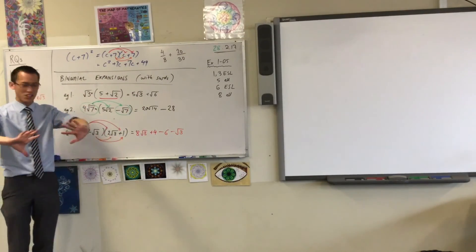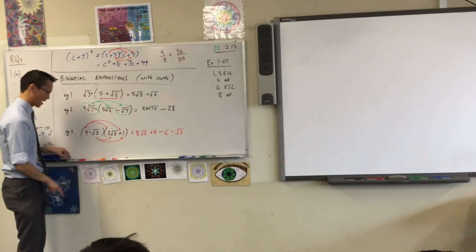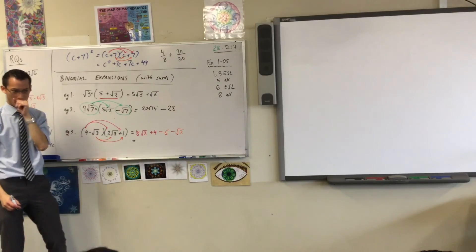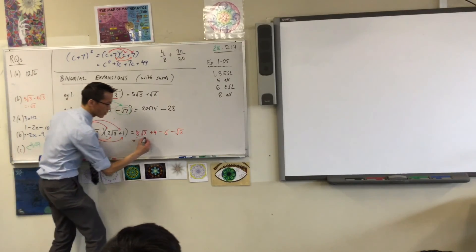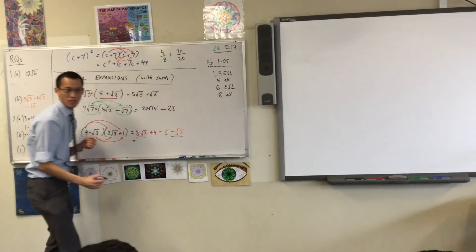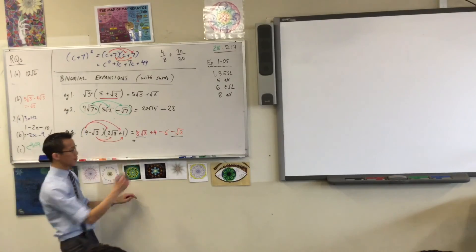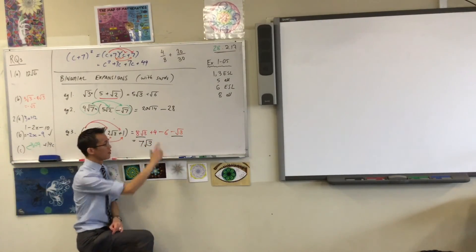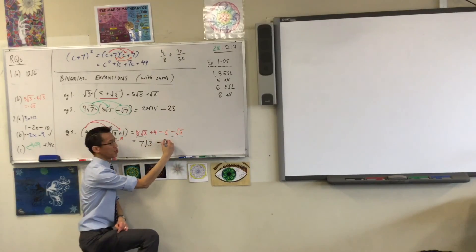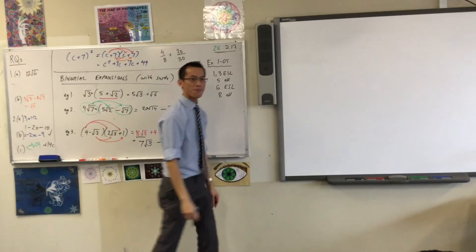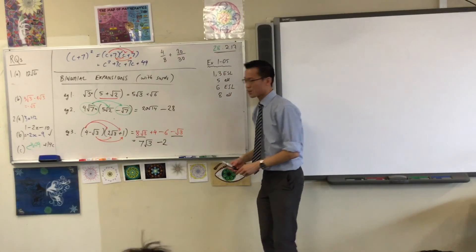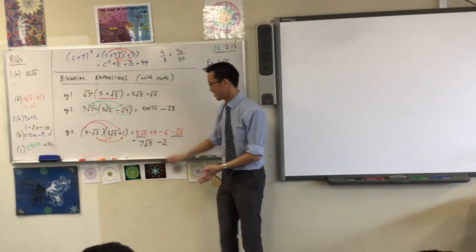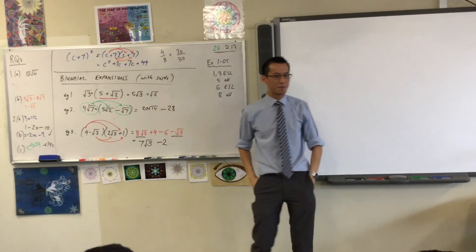So now I've done the expansion, but I should tighten this up. I should. I can write this a lot better. Have a look. Which are the like terms? 8√3 and minus √3. So how many √3's by the end? 7. Excellent. Then you deal with your whole numbers. Plus 4 minus 6 minus 2. And you're home. Okay? So there's a bit of mental effort involved to unpack what's happening here, but you guys can manage it. Okay?